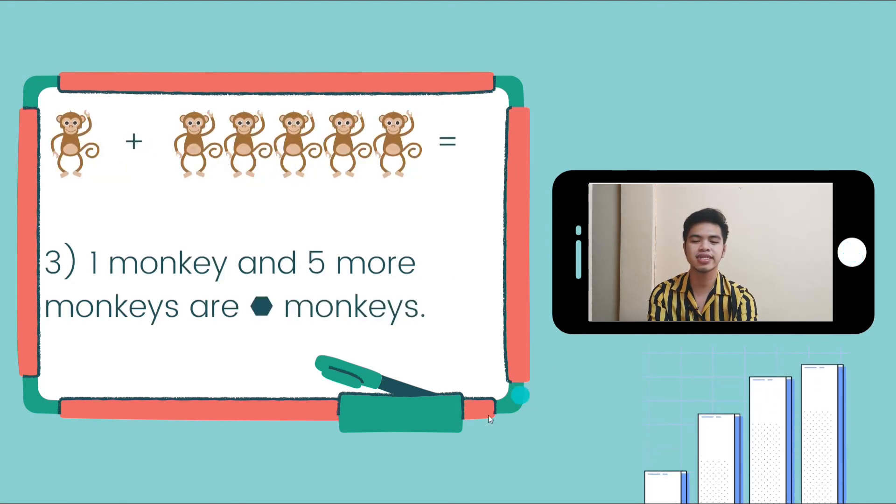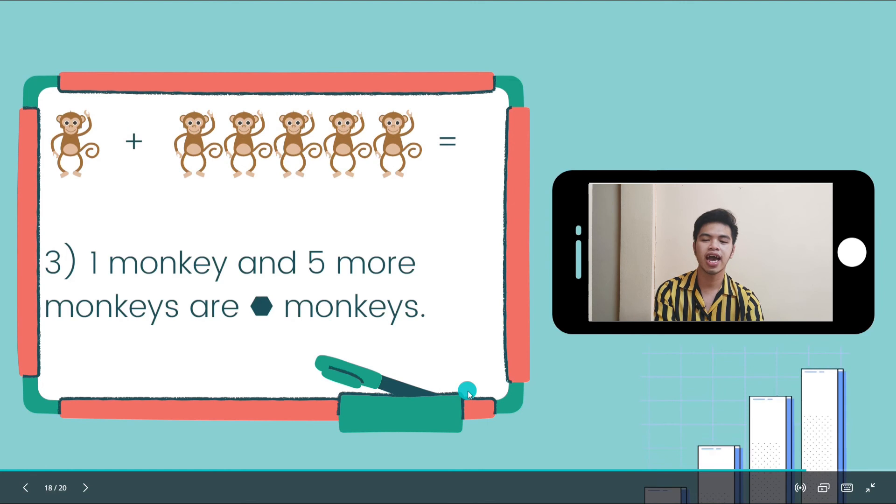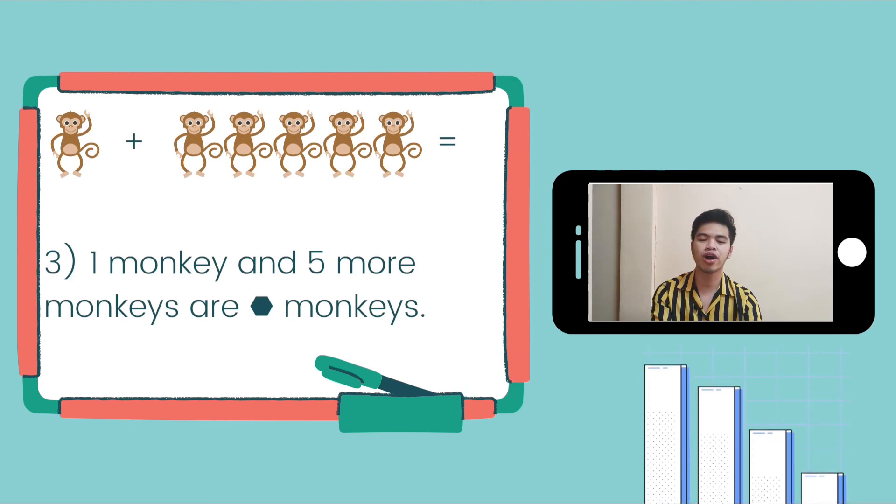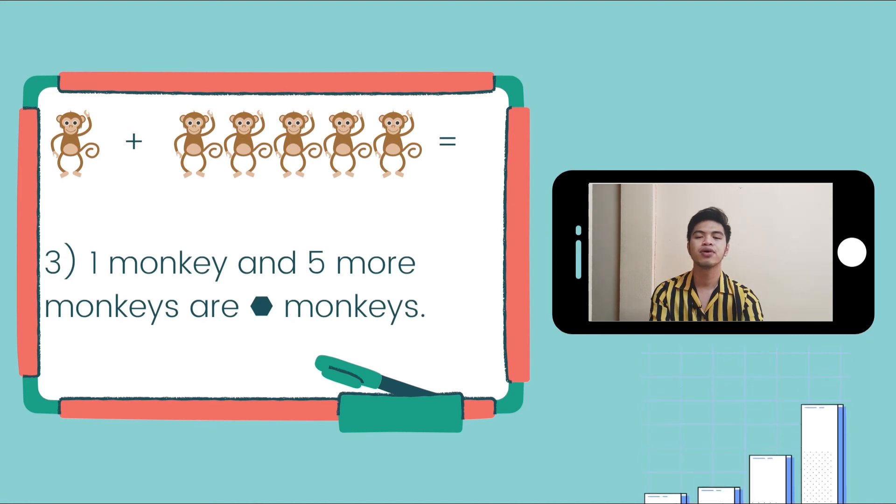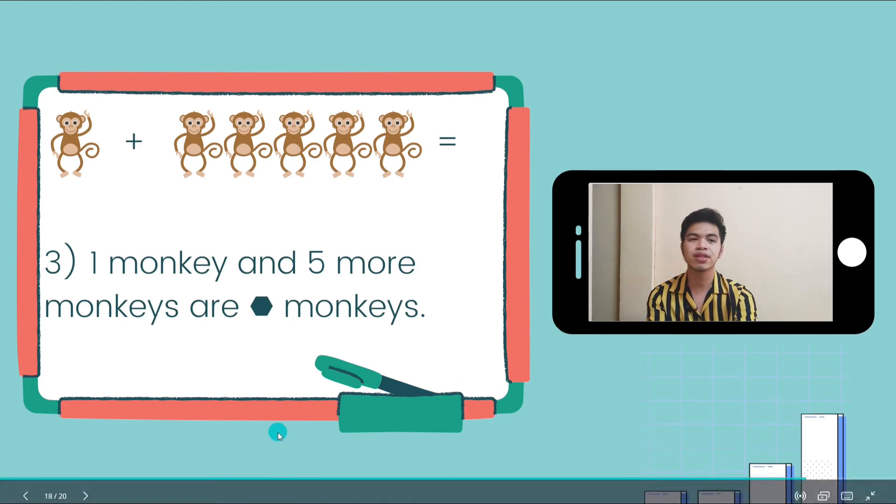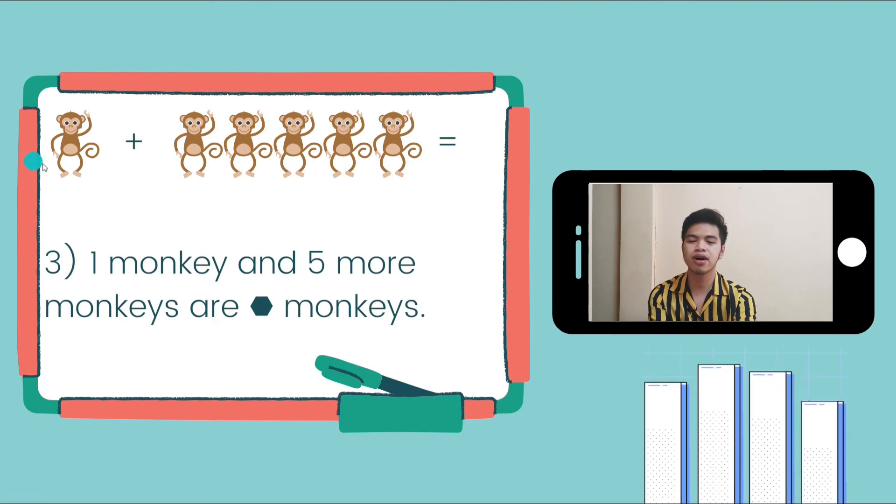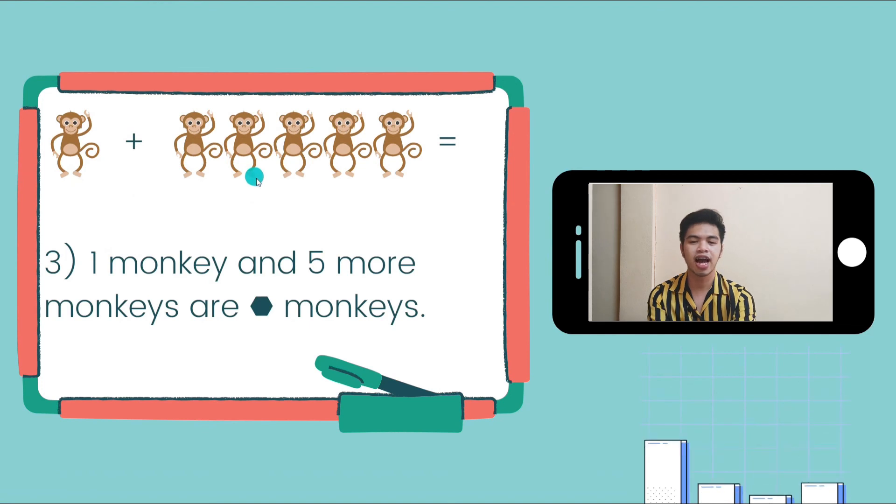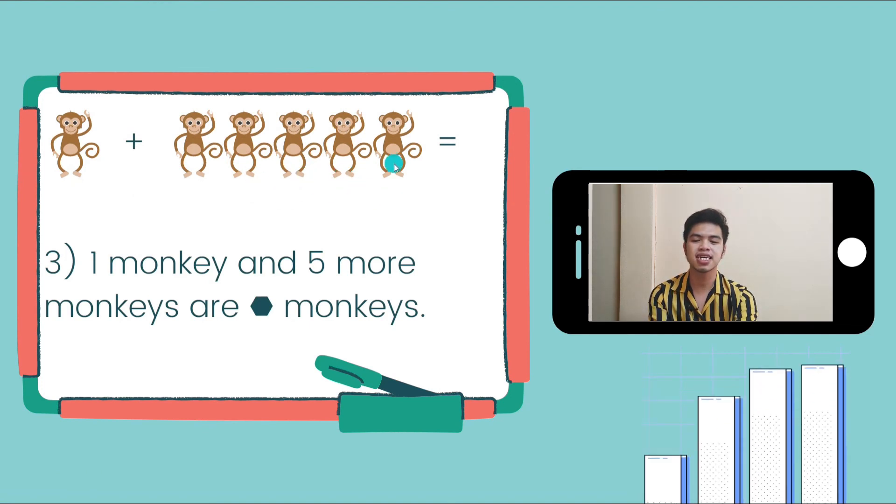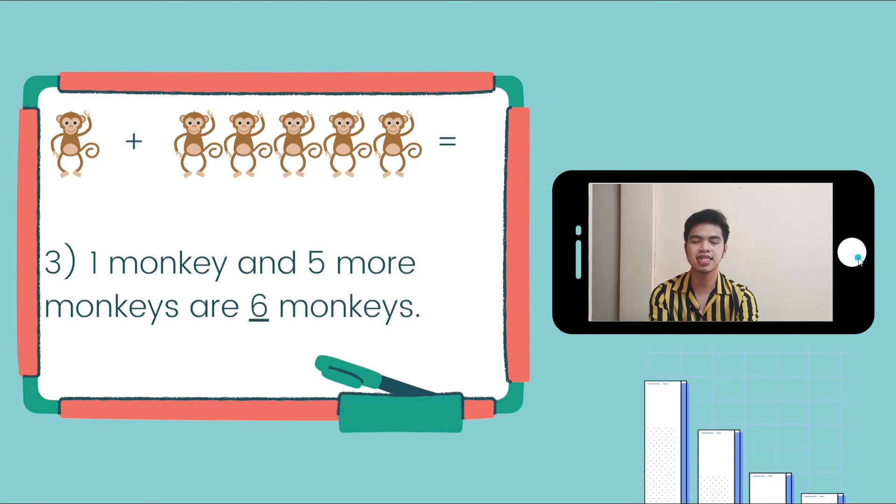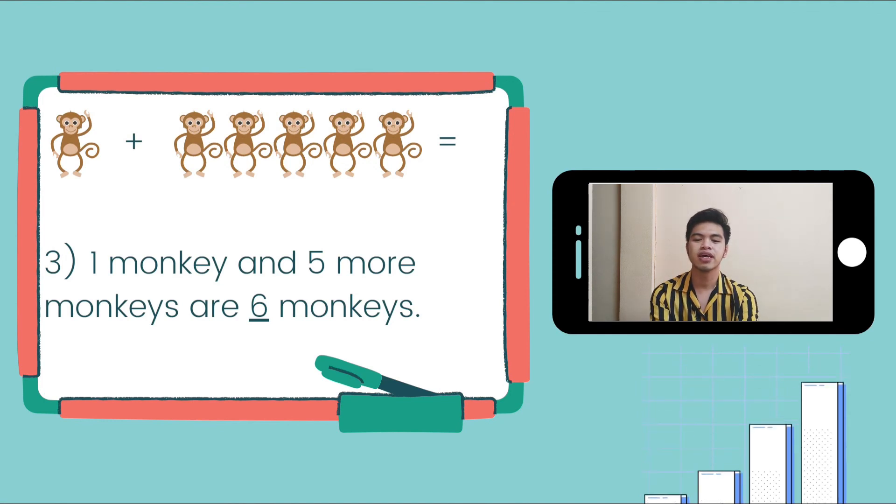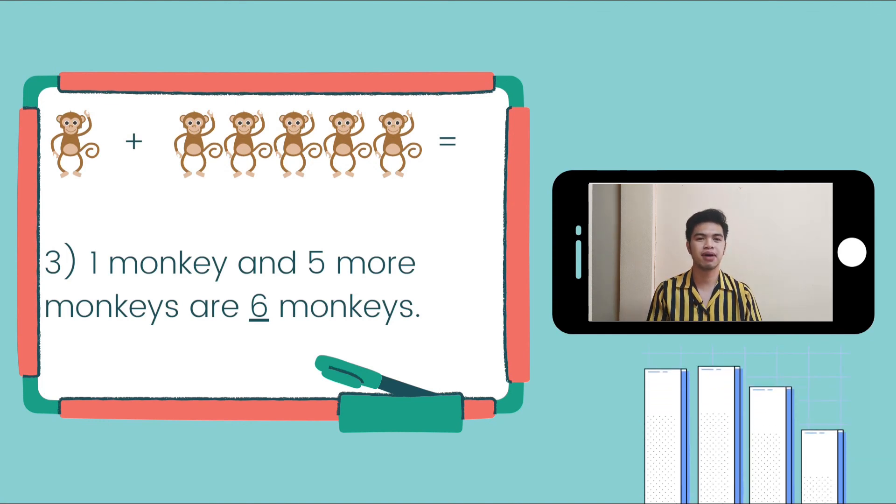Let's go to number 3. We have 1 monkey and 5 more monkeys. We're going to find out what is the answer by counting them. We have one, two, three, four, five, six. There are 6 monkeys. So, we're going to write 6 inside of the hexagon. Therefore, 1 monkey and 5 more monkeys are 6 monkeys. Good job.